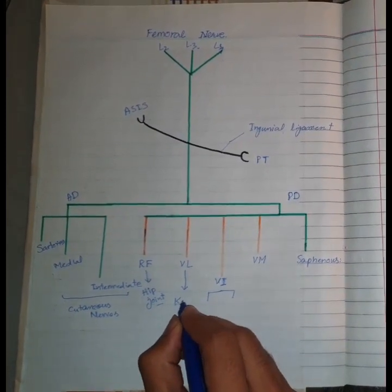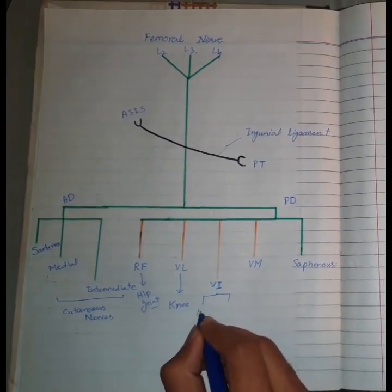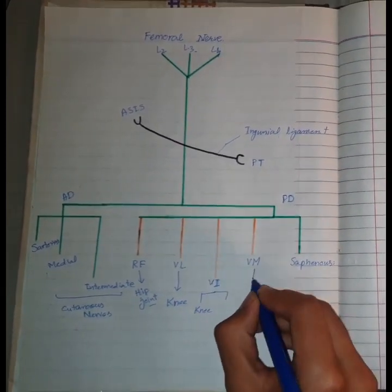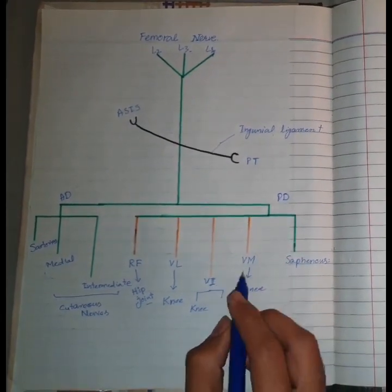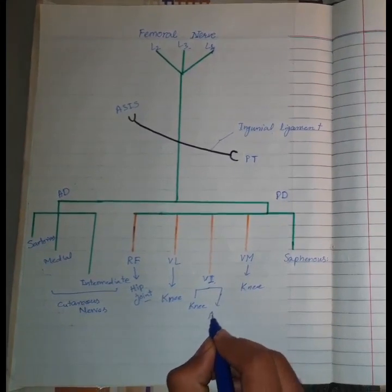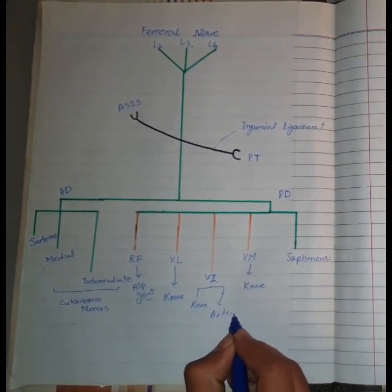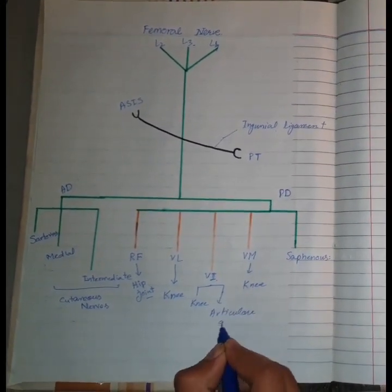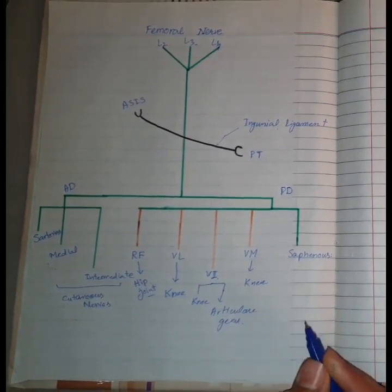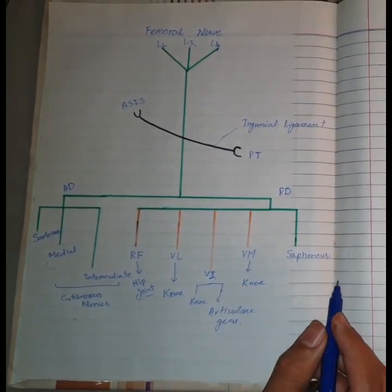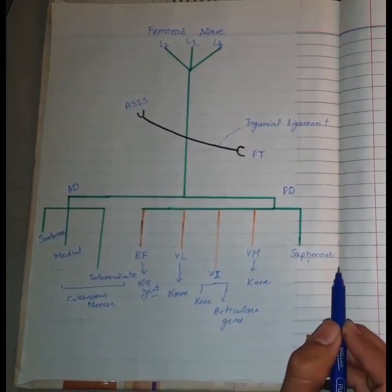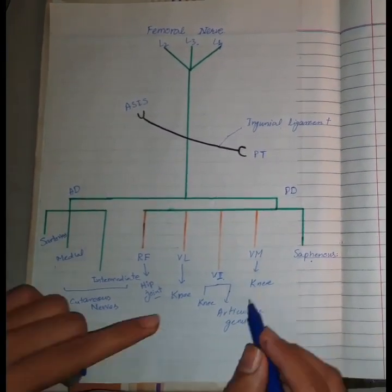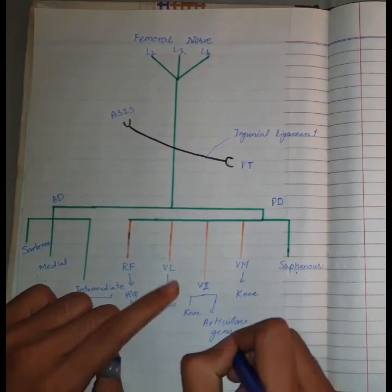The vastus intermedius also supplies the articularis genu muscle. The saphenous nerve is the cutaneous branch, and the articularis genu is also supplied by the vastus intermedius.